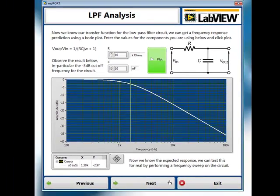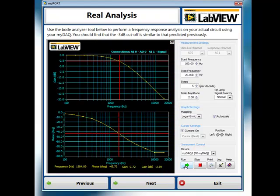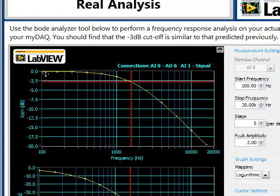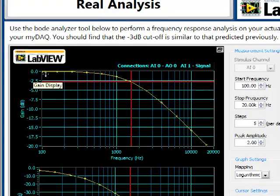Now, once we've got this prediction, we can then actually use the Bode Analyzer tool with the MI-DAC device. So this performs a real frequency sweep across our circuit and allows us to monitor the response of the circuit under the different frequencies.